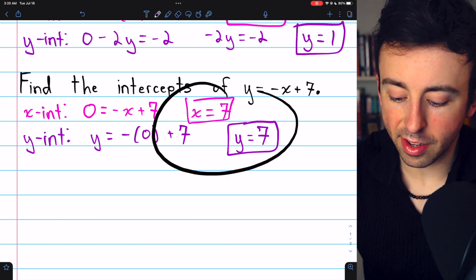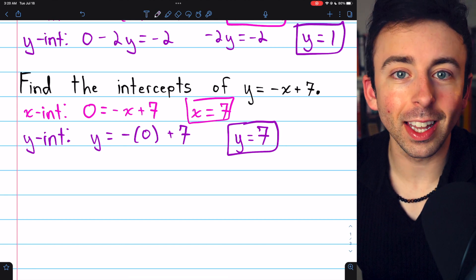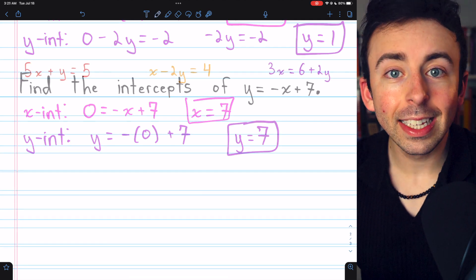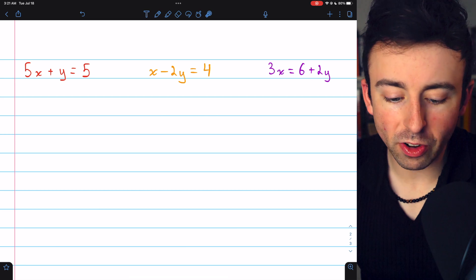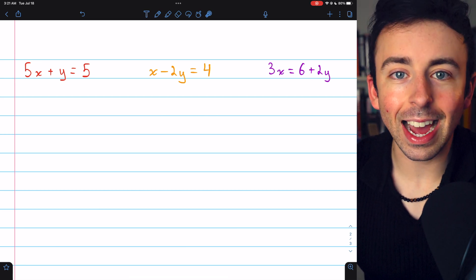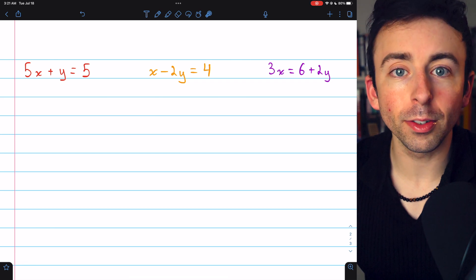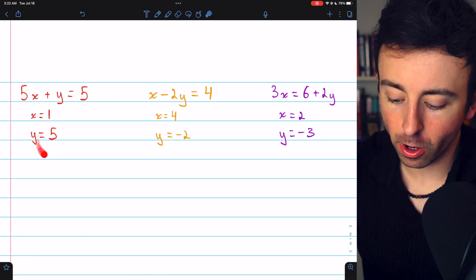You can try taking these two intercepts and graphing the line yourself. Now I'll show you a few more extra problems for practice. Here are three more linear equations. For each one, find the x and y-intercept like we just did. I'll put the solutions on screen now. And there are all the intercepts.